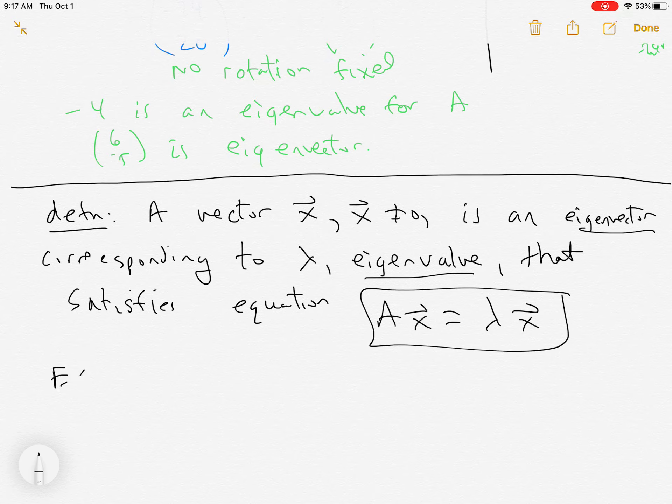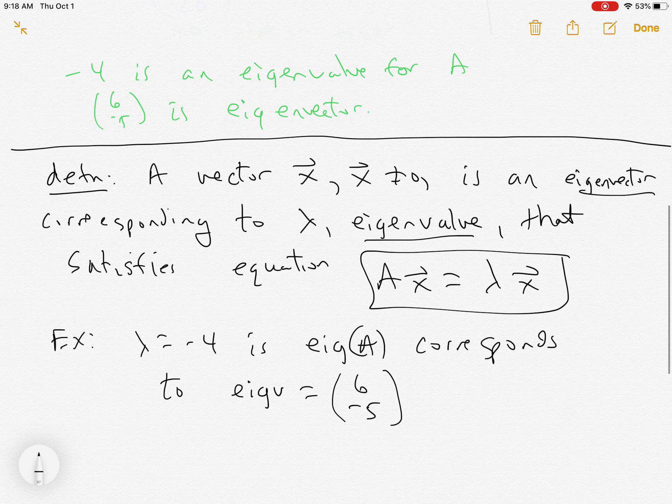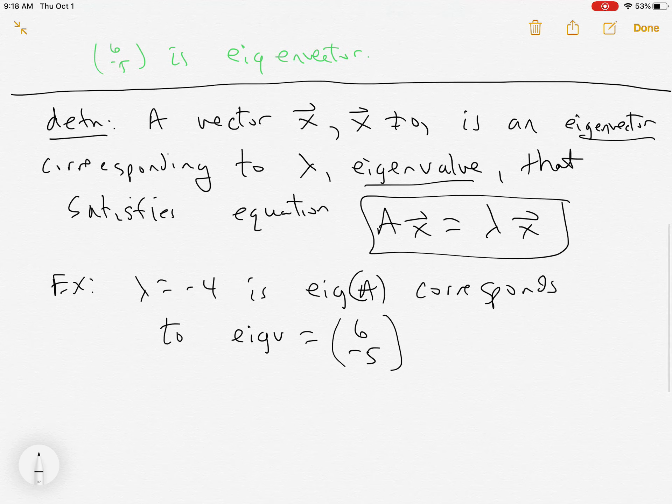For our example, lambda equals -4 is an eigenvalue of A that corresponds to eigenvector, in this case, (6, -5). So our goal really is to understand how this works, and to be able to compute these because they show up everywhere, and we use them for other things, like solving differential equations.